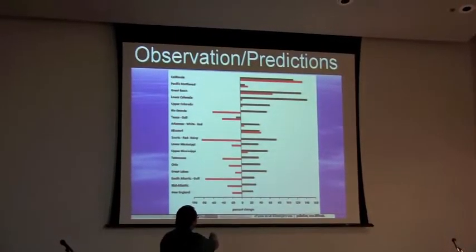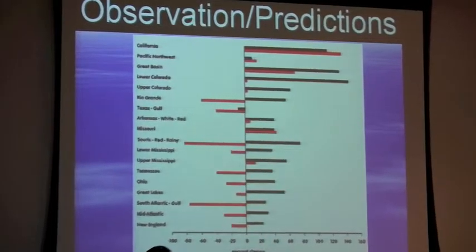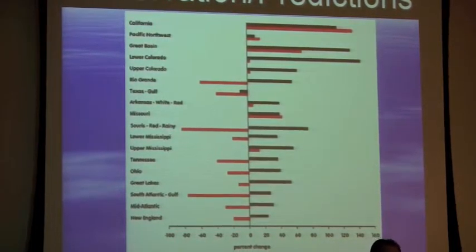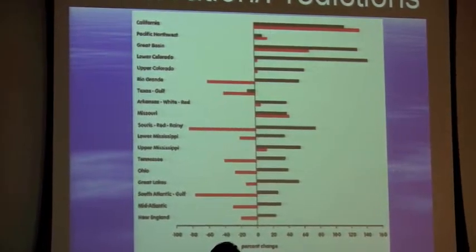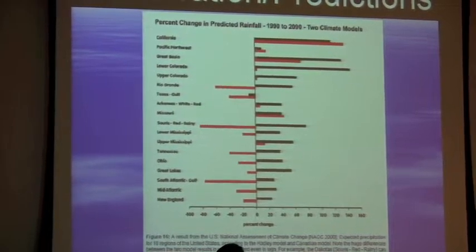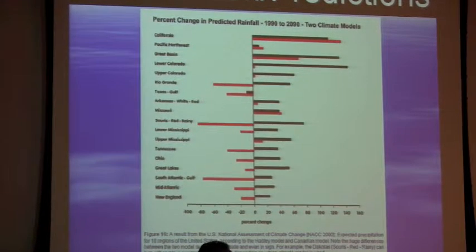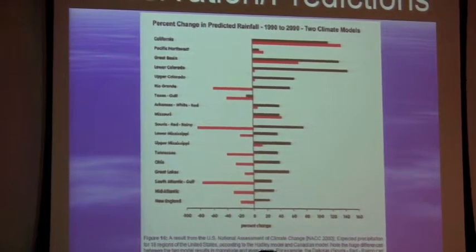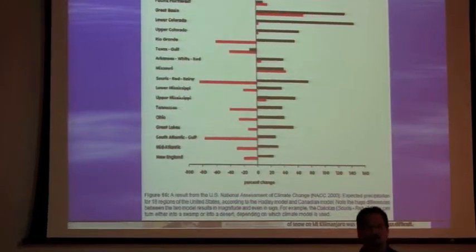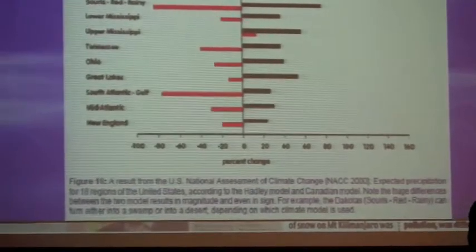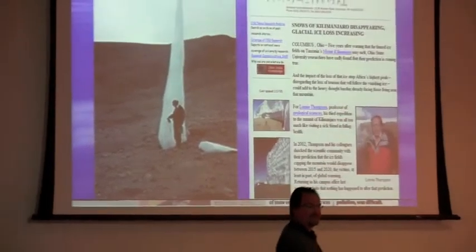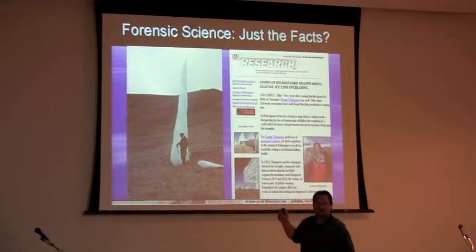Here's another chart. I see red bars and black bars going in different directions. What you're looking at are multiple computer models — for example, models labeled Texas Gulf, Missouri, Suarez, and Rainy. If you wanted to claim it was rainy in Suarez, you'd choose one model; if you wanted to claim it was dry, you'd choose another. That's what was used in Al Gore's movie — there was no point he couldn't prove by simply picking and choosing whatever computer model he wanted. To me, that is the worst science ever. If you submitted that for drug research to the FDA, you would probably be behind bars.